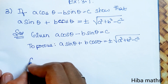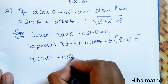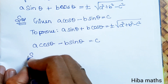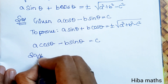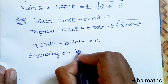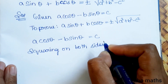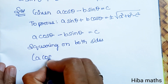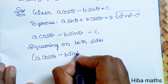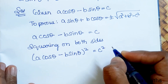So we will prove it. Given: a cos theta minus b sin theta is equal to c. Squaring on both sides, a cos theta minus b sin theta whole square is equal to c squared.